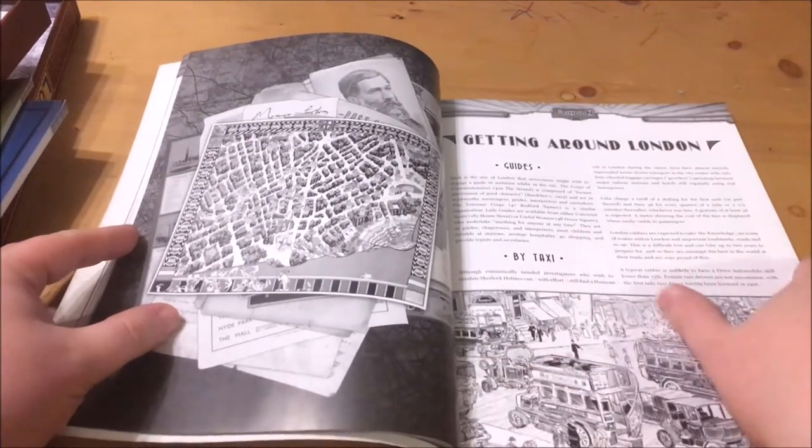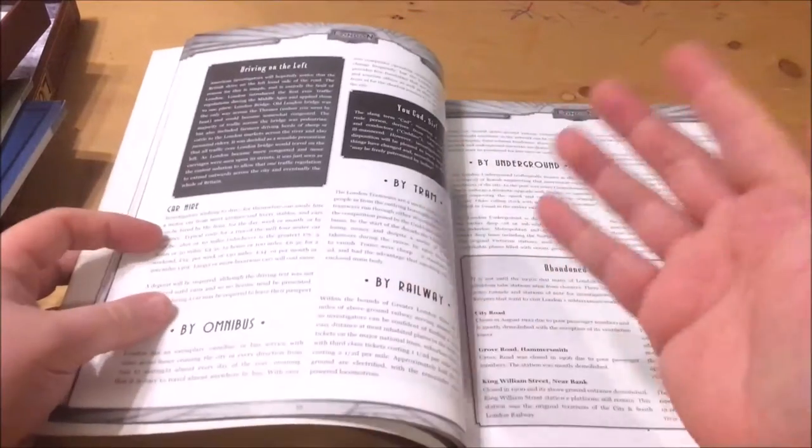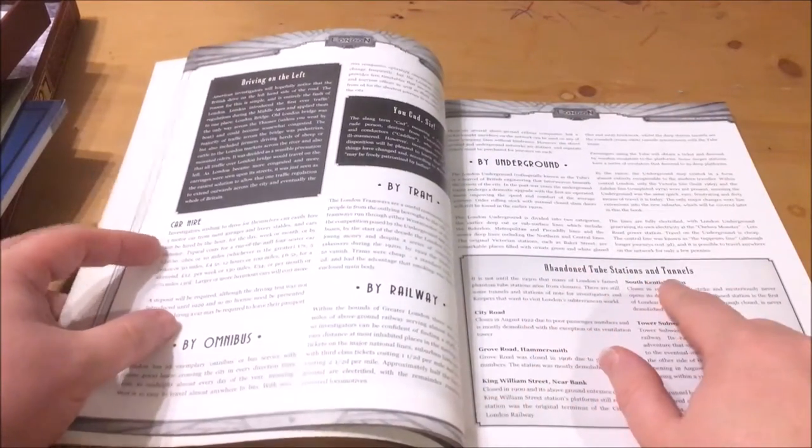The next chapter details how to get around London, be that via cars, taxis, trams or the famous London Underground and includes some information on abandoned underground stations.